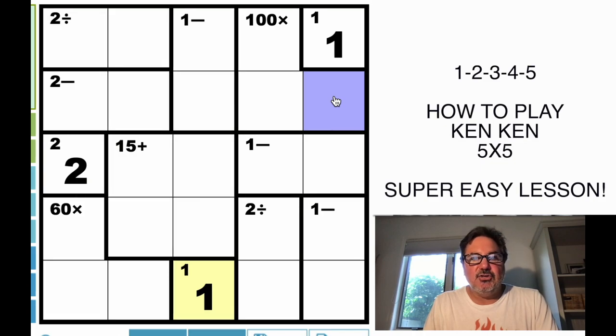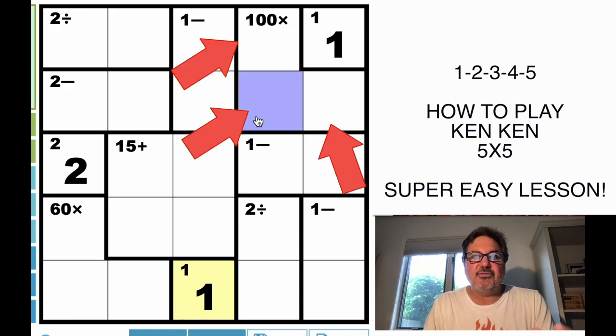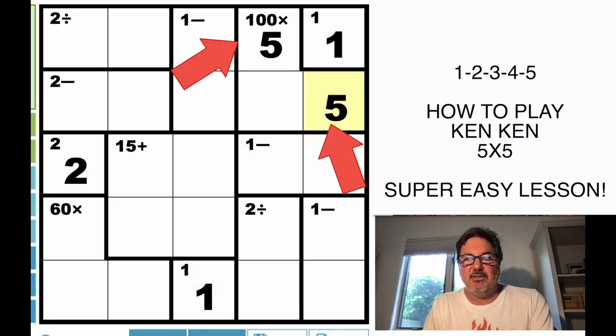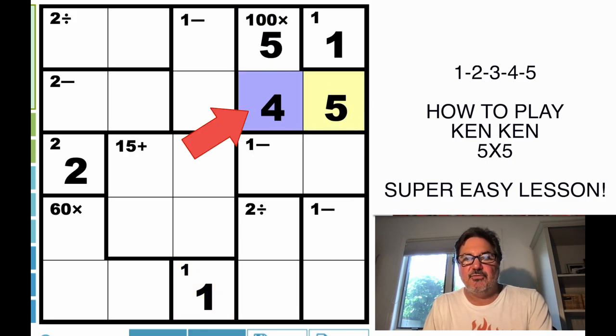There's no other combination using 1, 2, 3, 4, and 5 only that gets you to 100. So therefore, if we know that two of these have to be 5 and one of these has to be 4, this must be the 5. And that must be the 5. And that must be the 4.